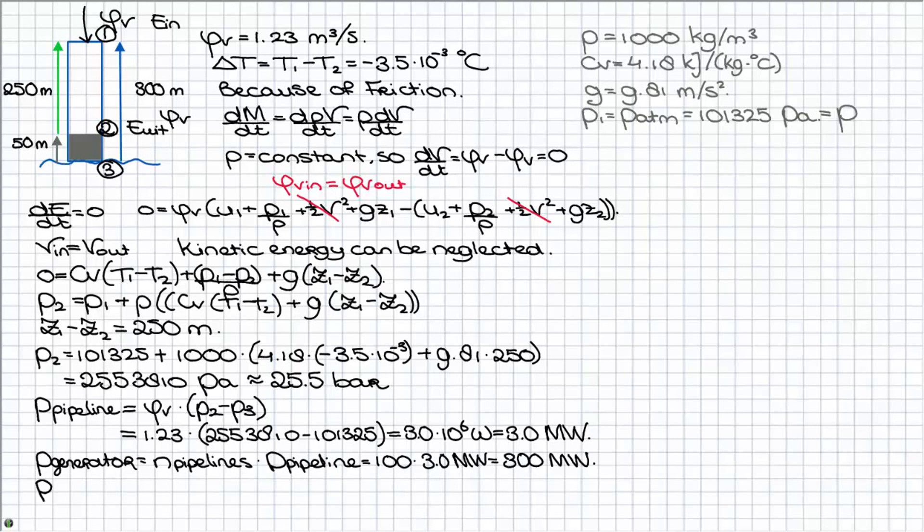In the last question we want to know how many generators are necessary to achieve the purpose of three quarters of 18 gigawatts. With a power of 300 megawatts for one generator we only have to divide 18 gigawatts by 300 megawatts to get the answer.